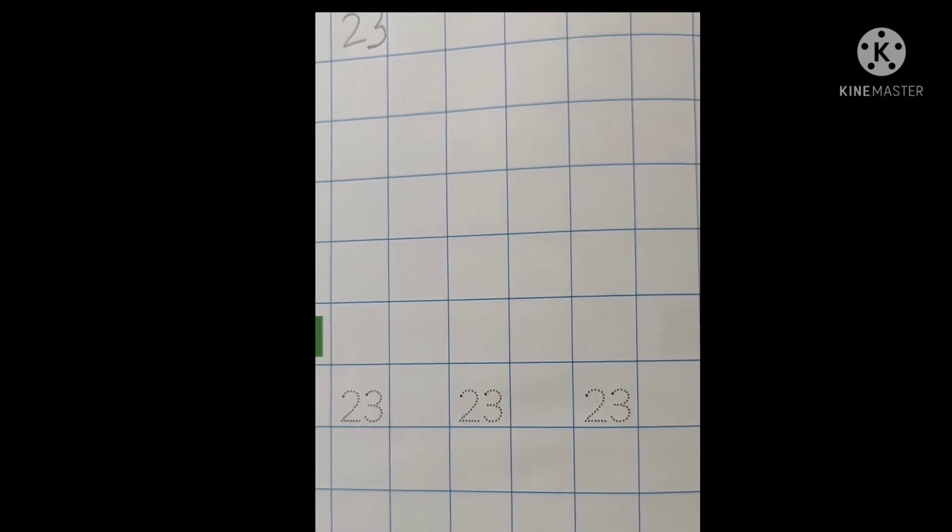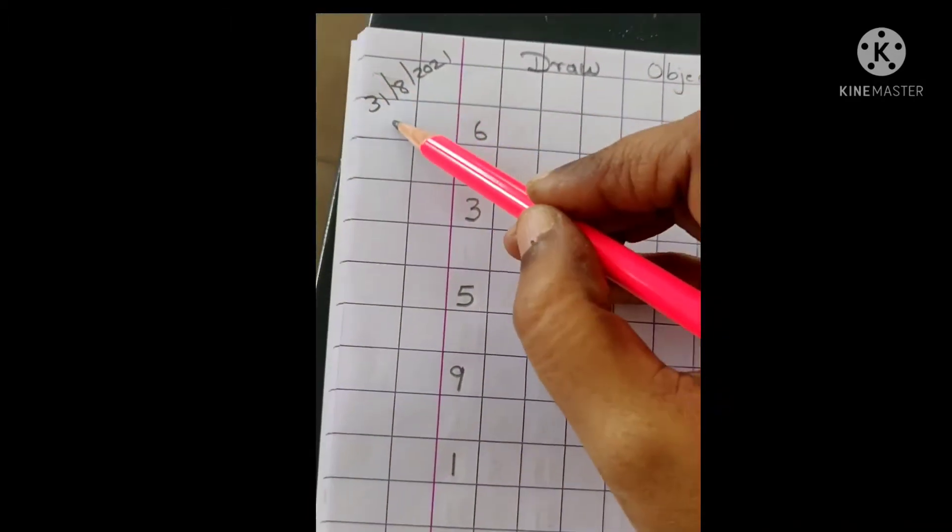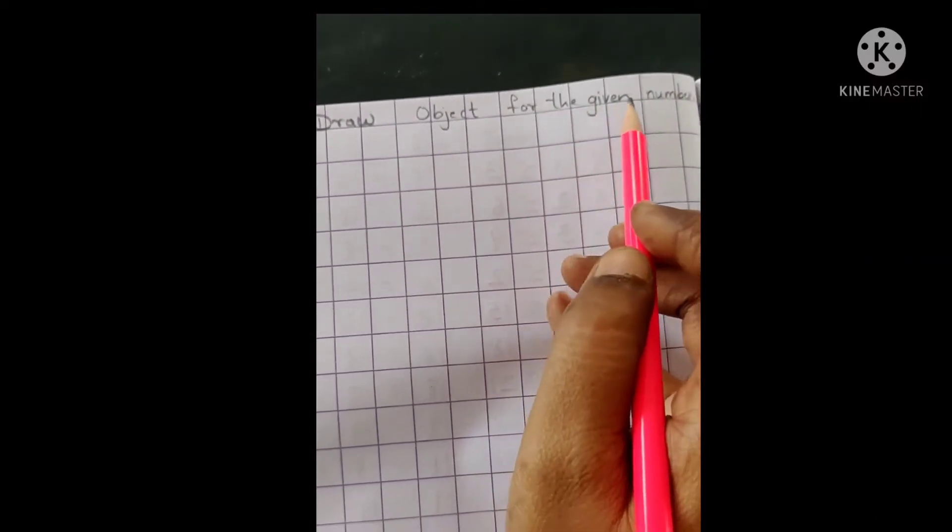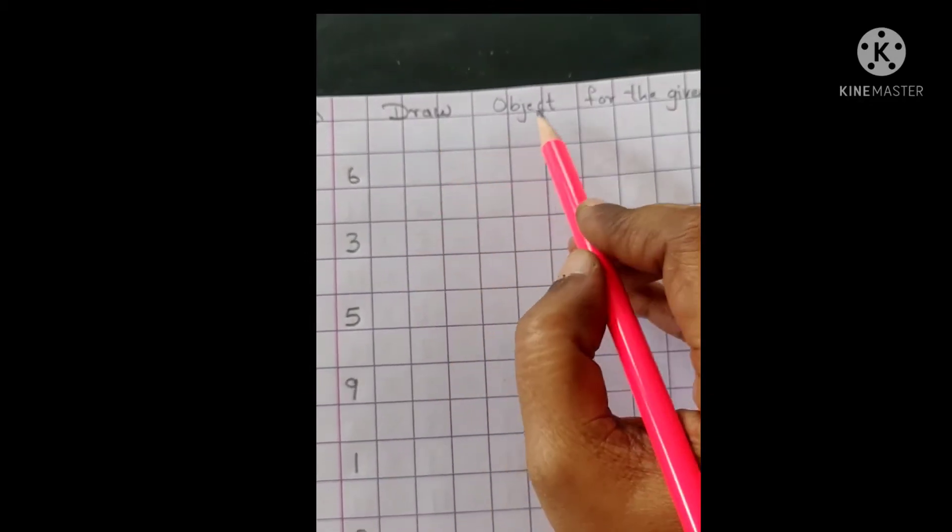Now, what we will do? This is less, right? Here, just open your square line notebook children. What we will do is write today's date and draw objects for the given number. Okay, heading is draw objects for the given number.